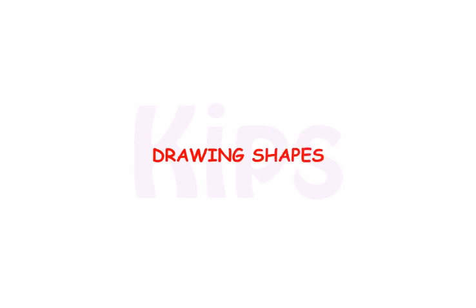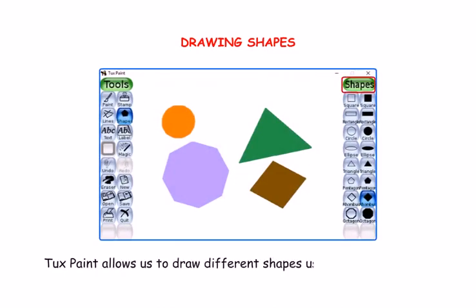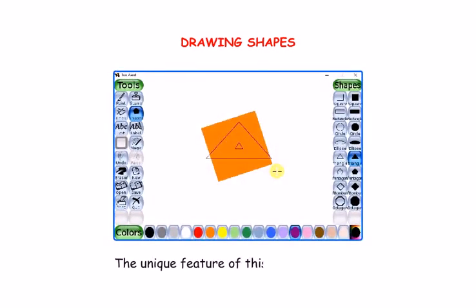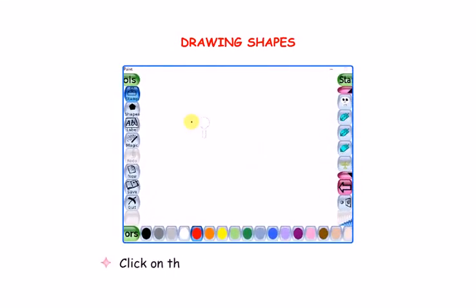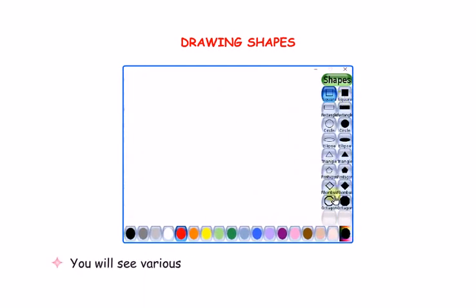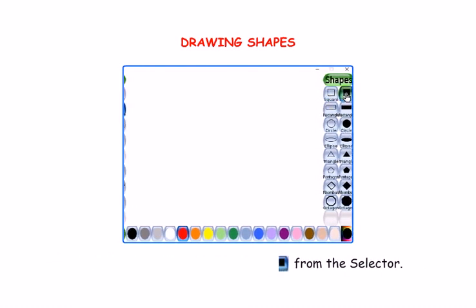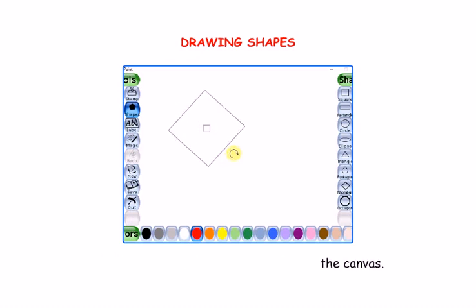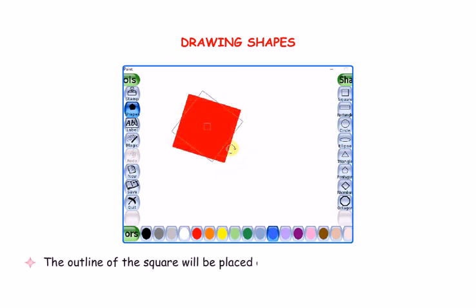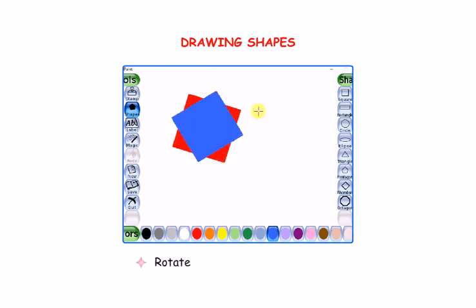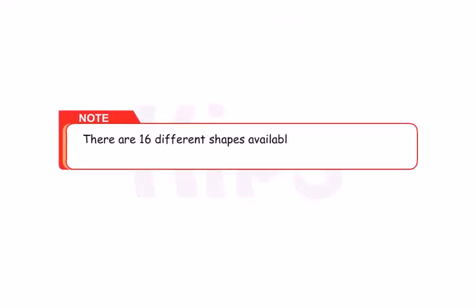Let us learn how to use the Shapes Tool. TuxPaint allows us to draw different shapes using the Shapes Tool. The unique feature of this tool is rotation — a shape can be rotated to any angle on a 360-degree scale. Click on the Shapes Tool in the Tools Bar. You will see various filled and unfilled shapes in the selector. Select the filled square shape, click and drag the mouse pointer on the canvas, then release the mouse button. The outline of the square will be placed on the canvas with the rotation handle. Rotate the shape as per your need. There are 16 different shapes available in the sub-toolbox of the Shapes Tool.